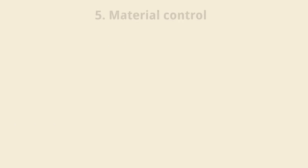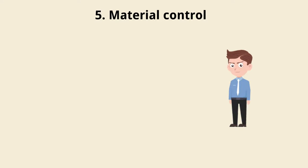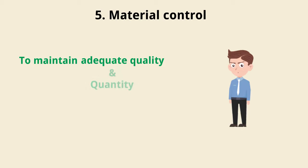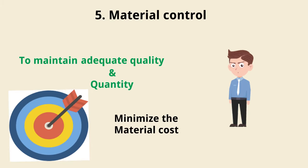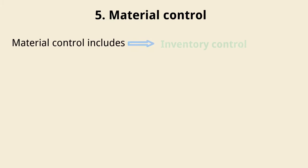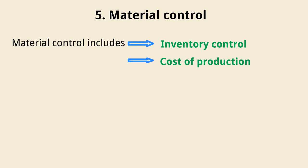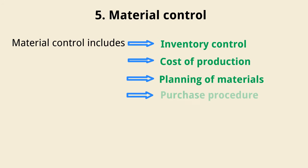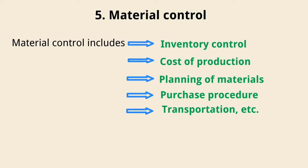5. Material control. Material control is the managerial activities relating to giving instructions to ensure maintaining adequate quality and quantity of materials for an uninterrupted production process with the objective of minimizing material cost. Material control includes inventory control, cost of production, planning of materials, purchase procedure, transportation, etc.